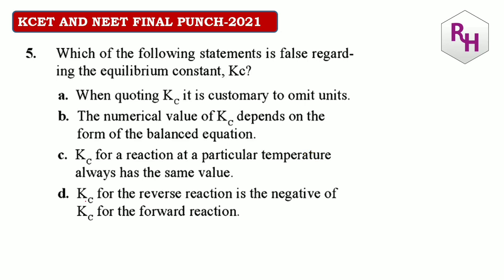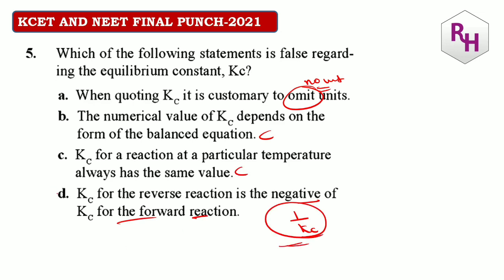Which of the following statements is false regarding equilibrium constant Kc? When quoting Kc, it is customary to omit units — there is no unit for Kc, so this is possible. The numerical value of Kc depends on the form of the balanced equation — definitely correct. Kc for a reaction at a particular temperature always has the same value — definitely correct. Kc for the reverse reaction is the negative of the forward reaction — WRONG. Kc for the reverse reaction is the inverse of the forward reaction. So the answer is D.